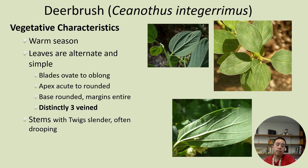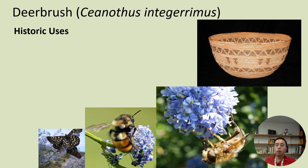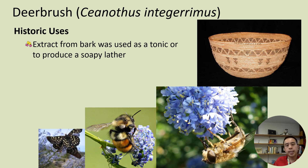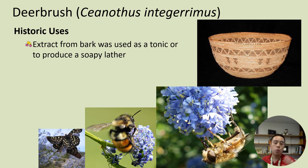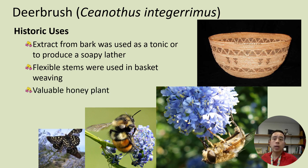The stems often have slender twigs that are also often drooping, and the stems themselves can be yellowish-green and can become corky with age. Historically speaking, compounds were extracted from the bark of Ceanothus integrimus and used as a tonic to produce a soapy lather for cleaning. It has flexible stems that were also utilized for basket weaving, and it's a very valuable honey plant as well.